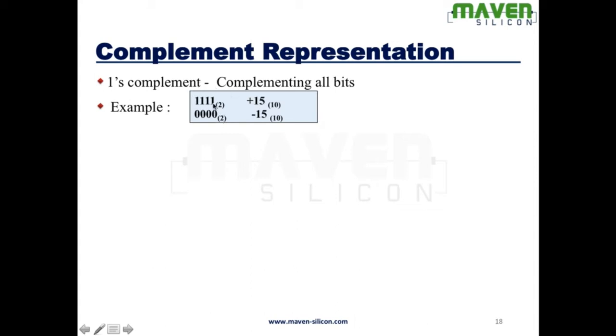Plus 15 will be all 1s and then I am going to complement all the bits that I am going to consider as minus 15. That's called 1's complement. This is how we define positive number and negative number.